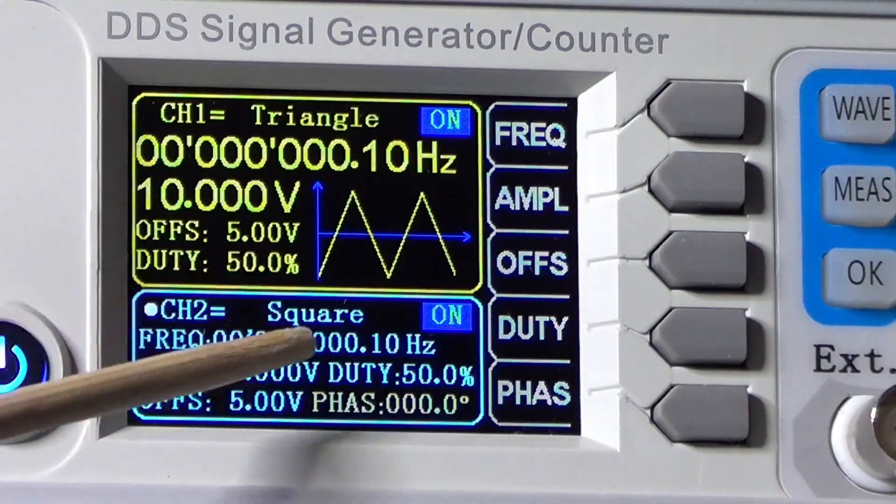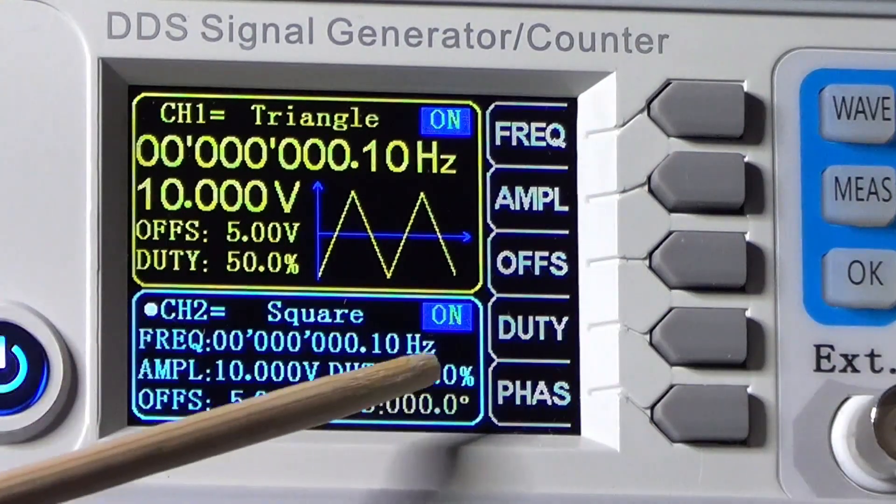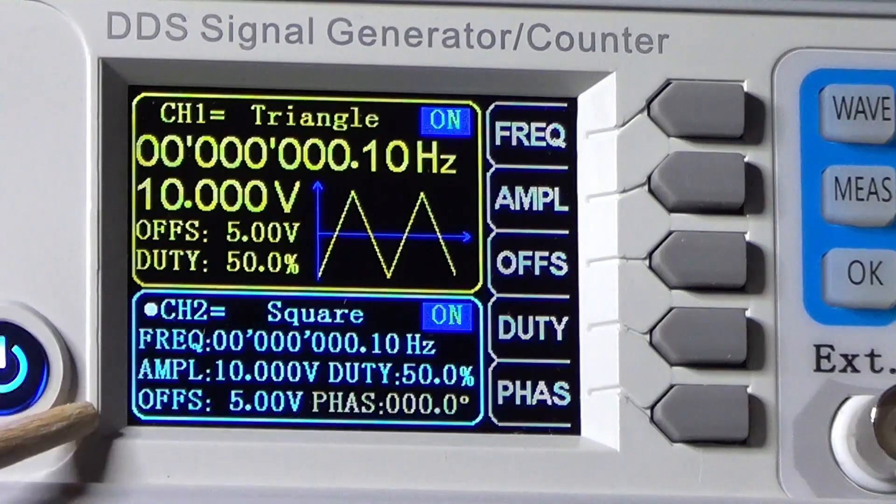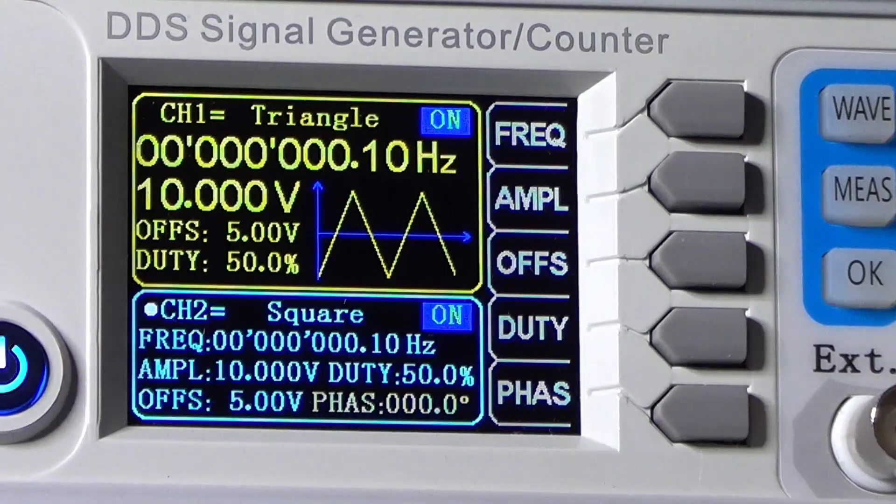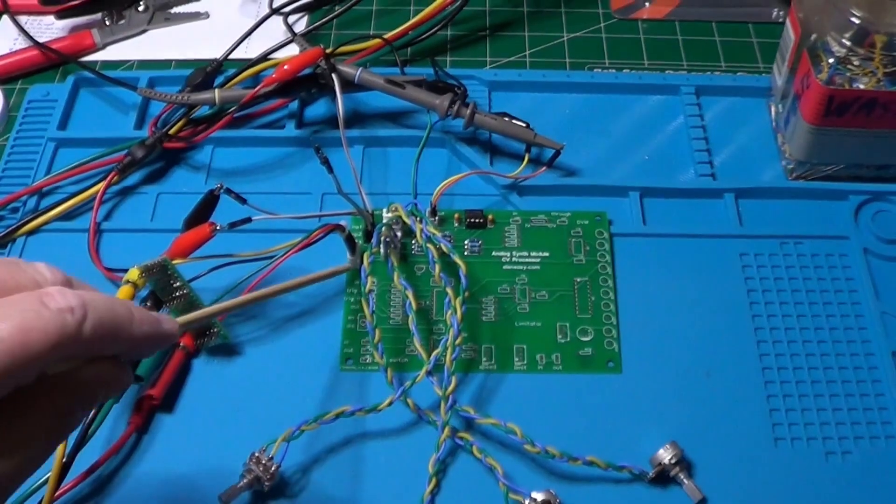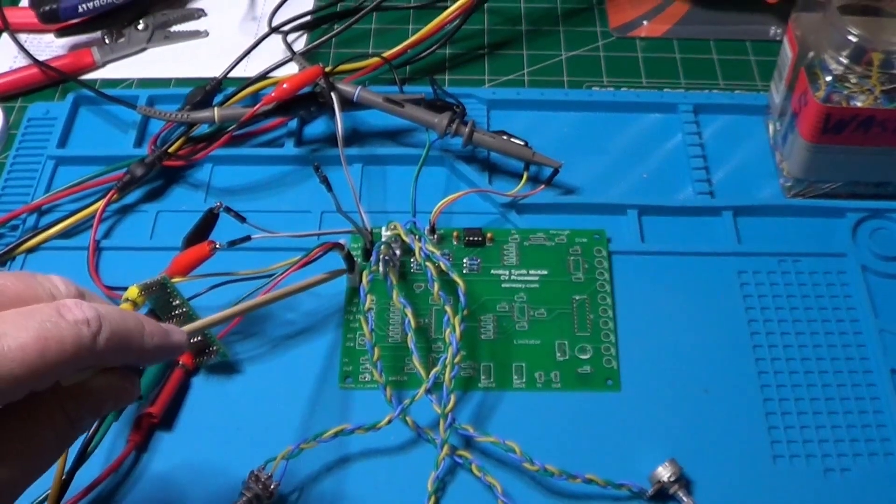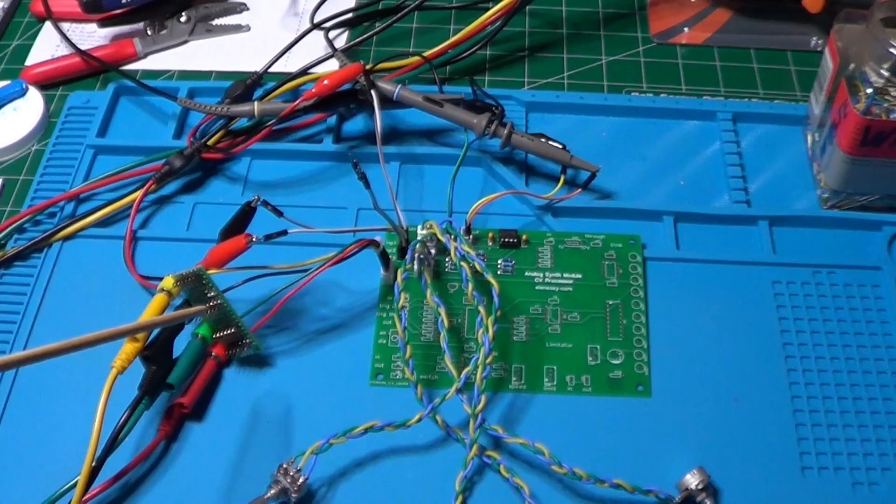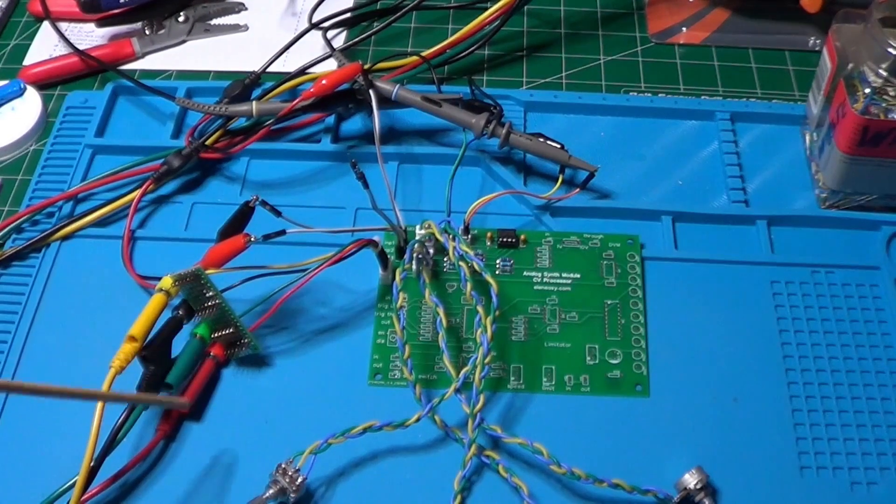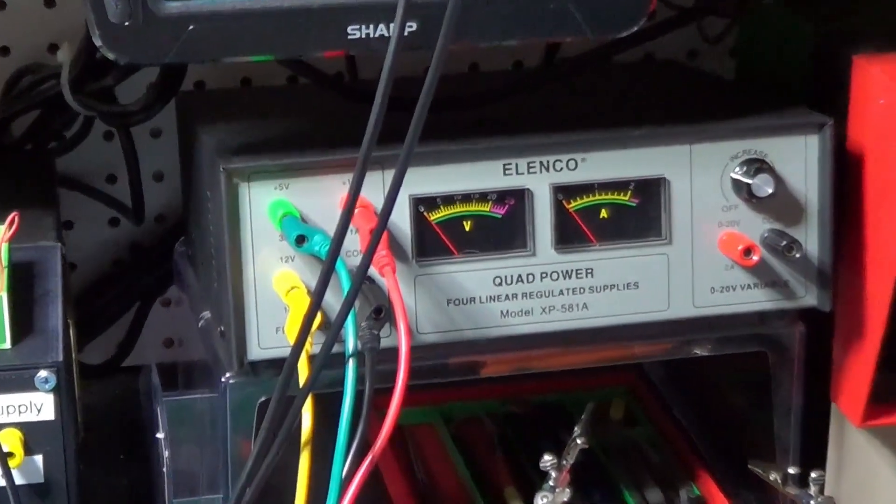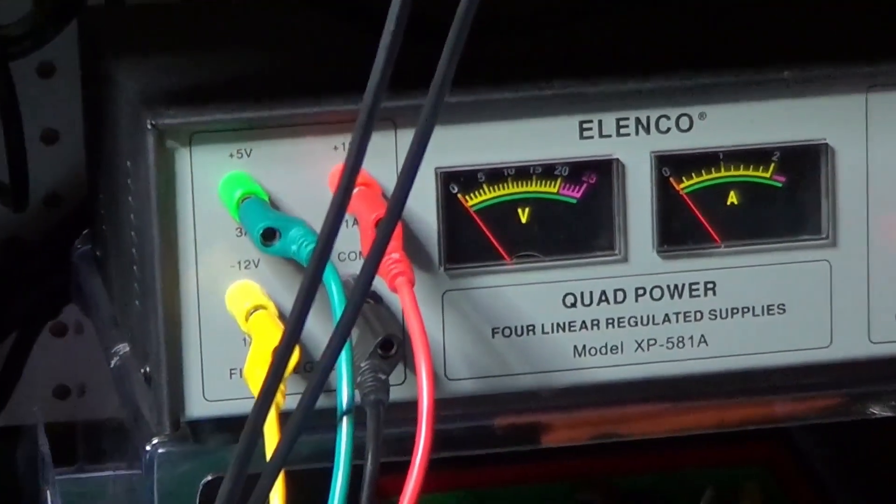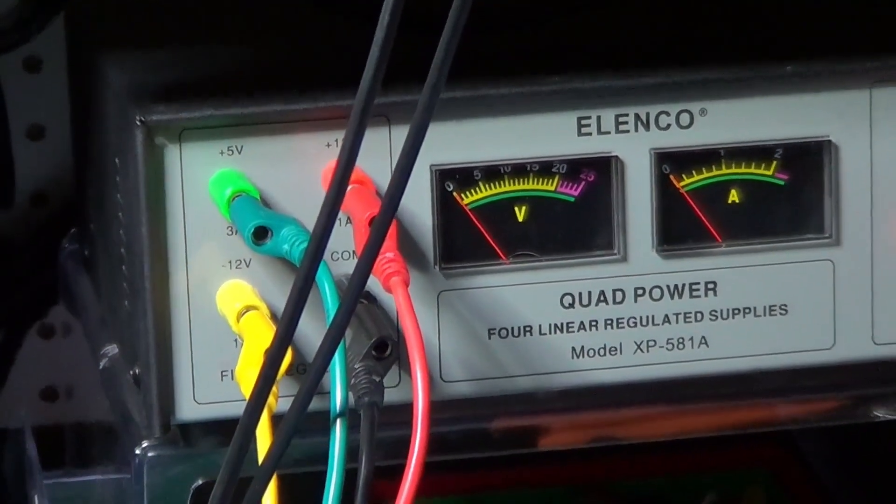Using two different shaped signals will allow us to see how the interaction changes as a function of the level set by the input potentiometers of the mixer. The power supply is connected through this four-pin connector attached to this perfboard, to which I attach the four cables that go to the power supply, providing plus 12V, plus 5V, and minus 12V with respect to the ground.